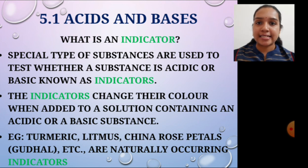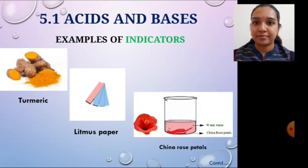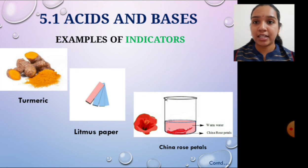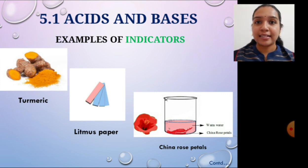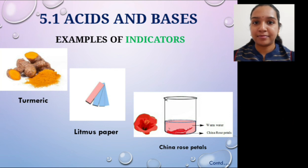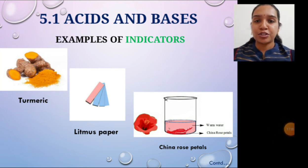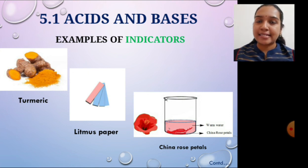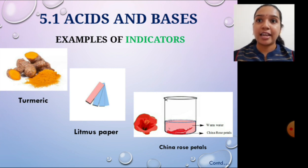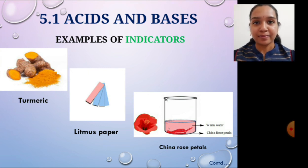An indicator is a substance used to test whether a solution or substance is basic or acidic in nature. These indicators usually change their colour to express whether the substance is acidic or basic during experimentation. Some naturally occurring indicators are turmeric, litmus paper, and china rose petals, which is the hibiscus flower. In the next class we will see in detail certain activities and experiments on how these indicators are used to identify the nature of solutions. Thank you, children.